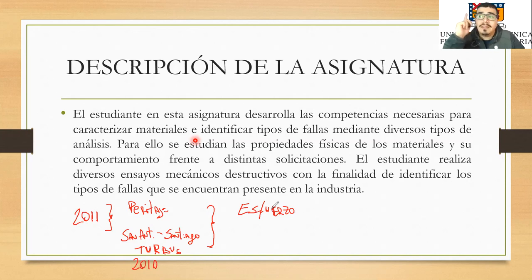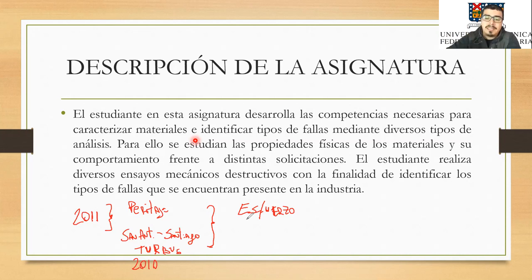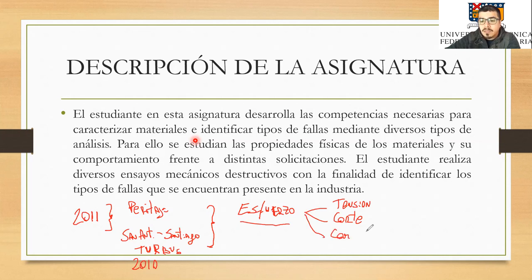Ya estoy hablando de diferentes tipos de materiales: ferrosos, no ferrosos, cerámicos, plásticos —específicamente polímeros— y vamos a ver de dónde sale esa palabra. El esfuerzo mecánico nos va a llevar a diferentes tipos de solicitaciones. Hay esfuerzos de tensión, de corte y de compresión. Por ejemplo, si usted en este momento está sentado en una silla con cuatro patas, esas patas en este momento están sintiendo un esfuerzo de compresión.